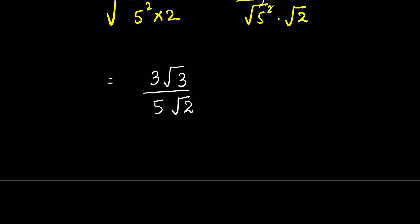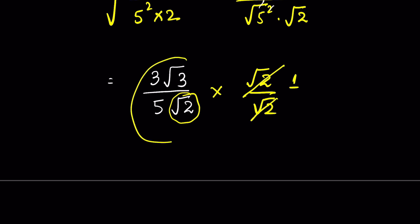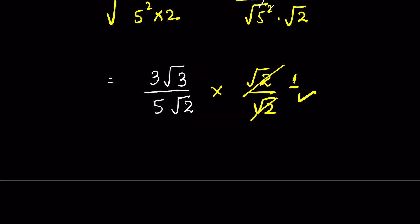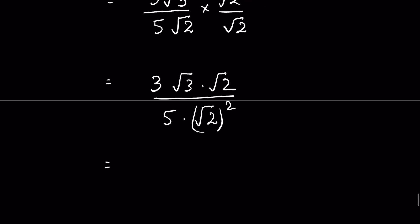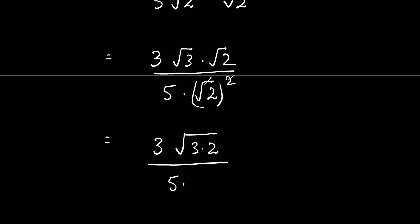To rationalize the denominator, we multiply and divide by square root of 2. We multiply and divide — not just multiply — because square root of 2 upon square root of 2 equals 1, and multiplying by 1 does not change the number. So we multiply by square root of 2 upon square root of 2, giving us square root of 3 times square root of 2 upon 5 times square root of 2 squared. Removing the square root with the square gives 3 times 2 under square root upon 5 times 2, which is square root of 6 upon 10.